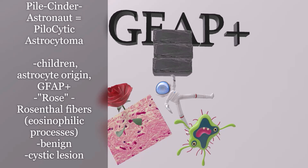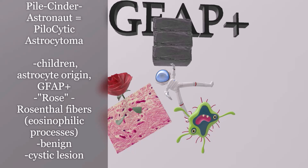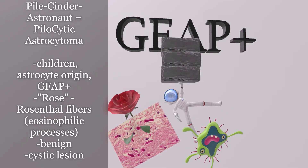The rose reminds us of Rosenthal. We see the very eosinophilic processes of glial cells associated with pilocytic astrocytoma. Unlike glioblastoma multiforme which is highly malignant, pilocytic astrocytoma is actually benign. It is often found in the cerebellum, which makes sense as child tumors are found below the tentorium. As a final point, this tumor will often have a cystic lesion with a mural nodule on its wall — pilocytic: cytic for cyst.